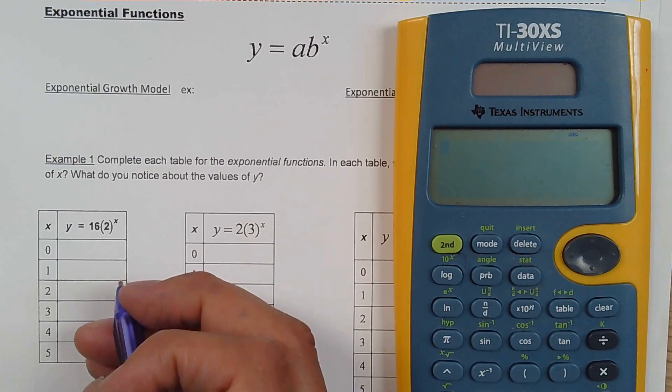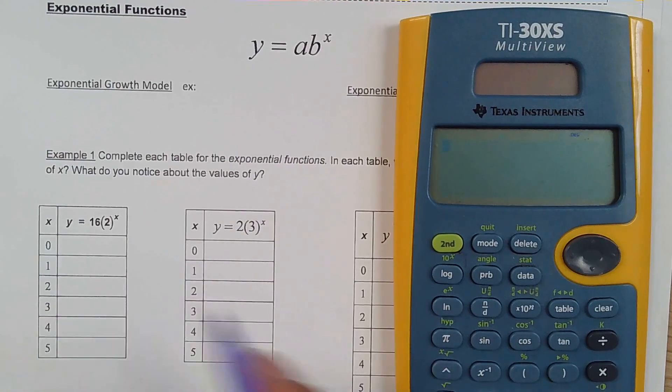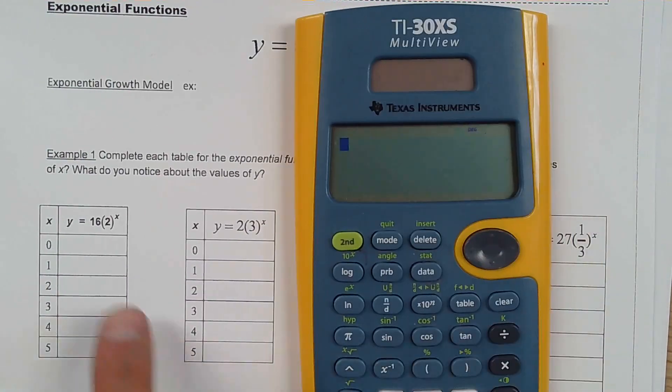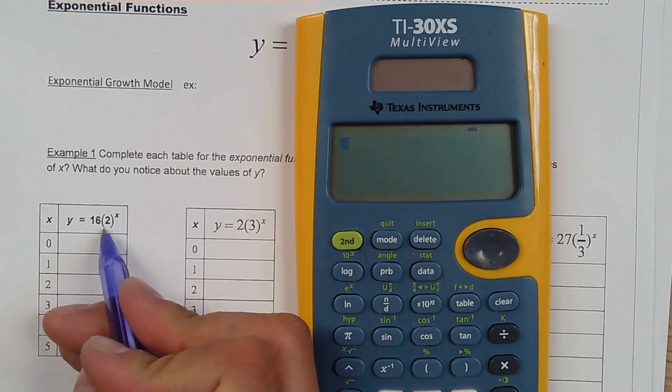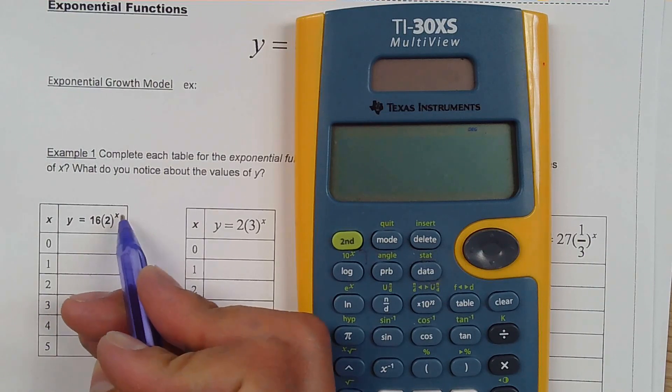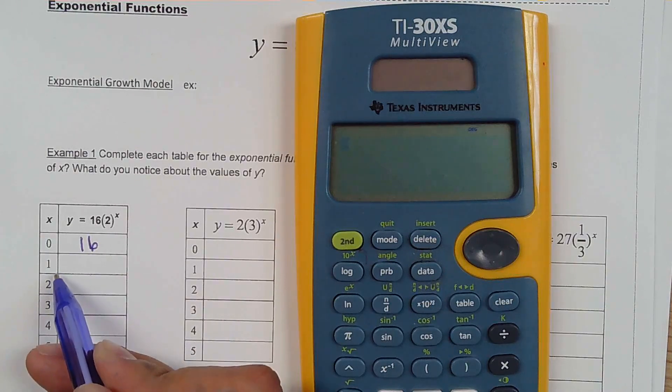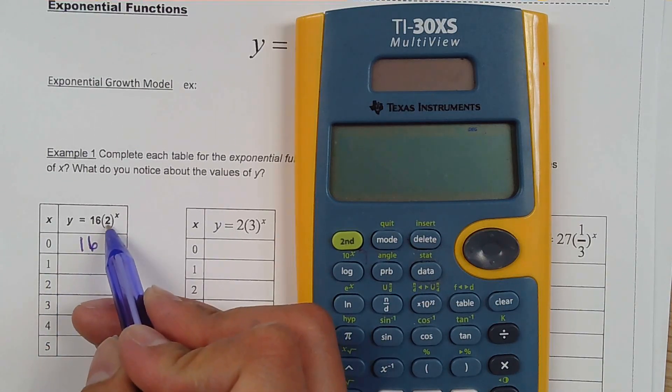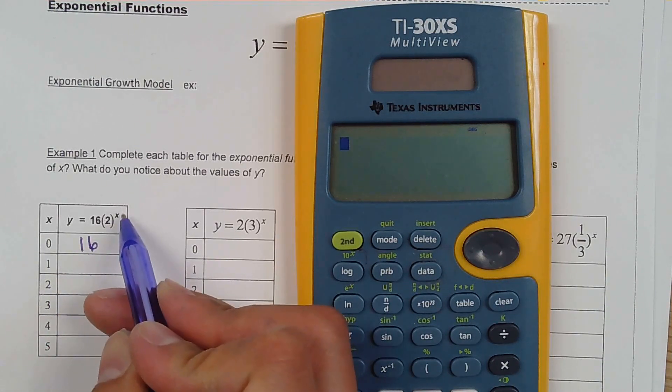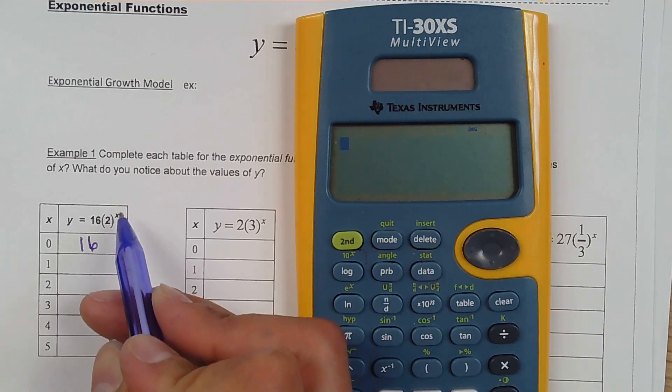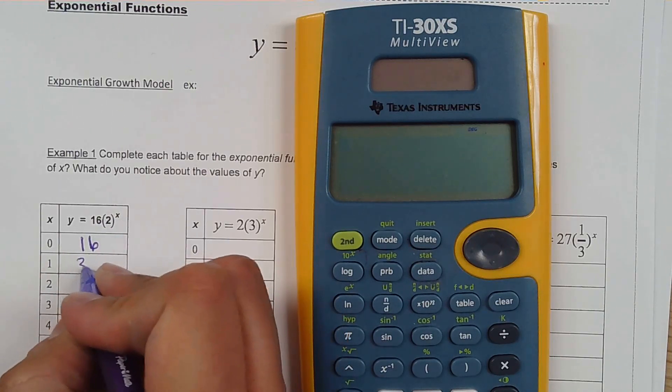So some of this I can do it in my head, some of this I have to actually put it in a calculator. That means for the first one I can do 0, 2 to the 0 is 1, 1 times 16 is 16. And then the next one is going to be 2 to the 1 will be 2, and then 2 times 16 is 32.